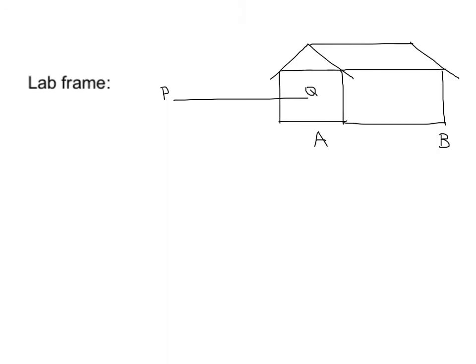We will begin by looking at the lab frame. Here is our picture of the barn. A is the front of the barn, B is the back of the barn, Q is the front of the pole, and P is the back of the pole.